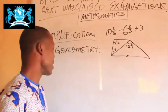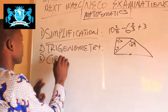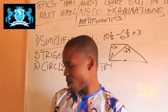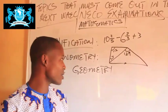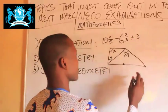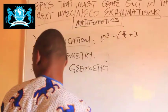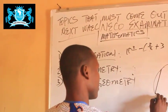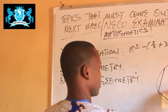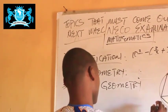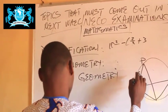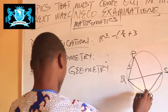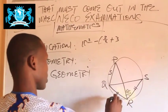The third topic I want you to focus on as you prepare for your exam is Circle Geometry. This one comes out every year — you are sure it will come out. Let me give you an example of a question in Circle Geometry. There are many different types. We will not be solving them right now, but pay attention to them, as these questions come out every year. So focus on Circle Geometry.